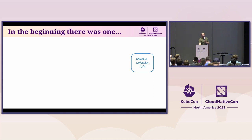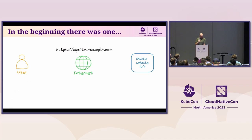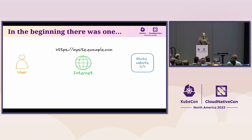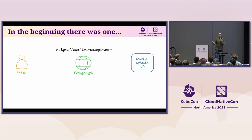So they've got a website and want to expose it. They had one user — themselves. It was going to be public, so they needed to expose it over the internet. They had a domain, example.com, and wanted it at mysite.example.com. Well, how do people find out where to send their packets? Through the magic of DNS — the address book of the internet.